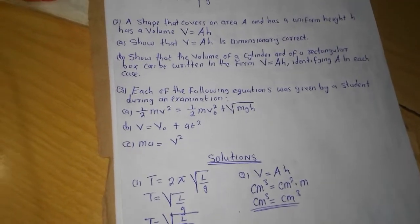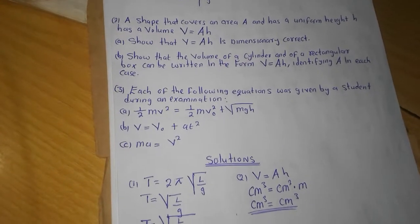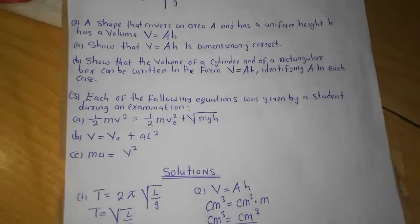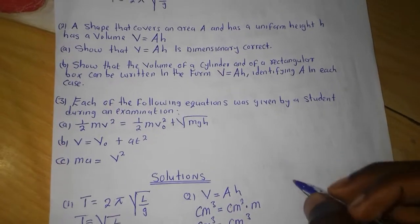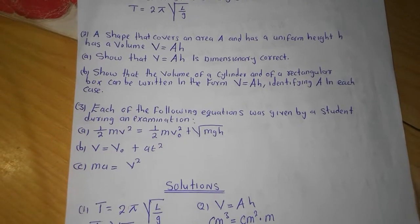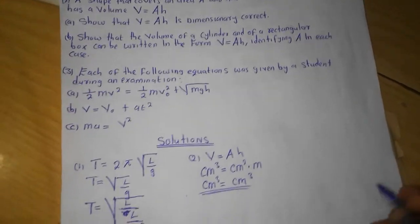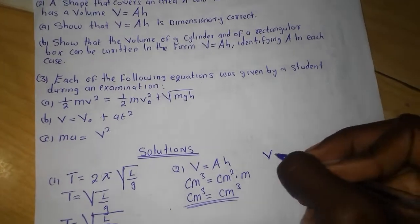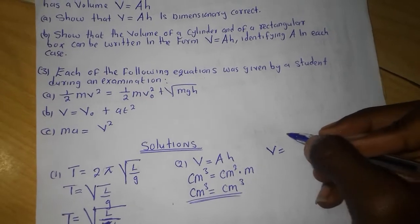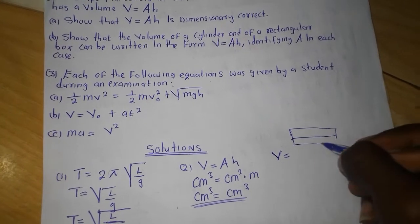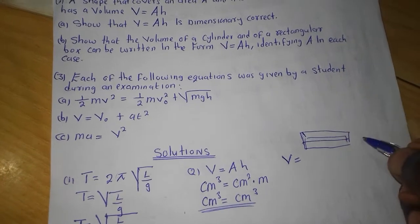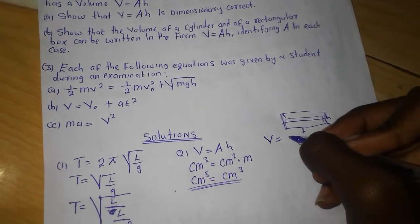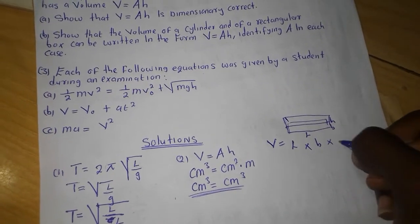The second part, question B, asks us to ensure that the volume of a cylinder and of a rectangular box can be written in that form. We know that the volume of a rectangular box — if we have a rectangle with some length, some height, and some breadth — is going to be length times breadth times height.